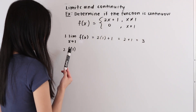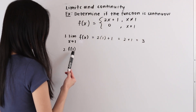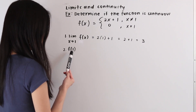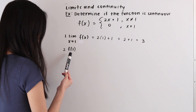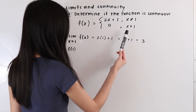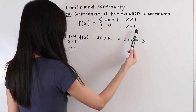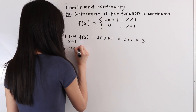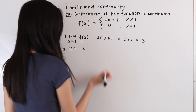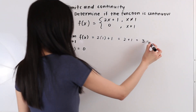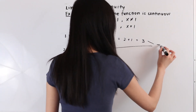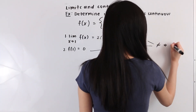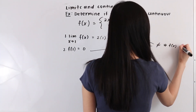As our next step, let's determine what f(1) is equal to — we want the y value corresponding to x equals one. Looking at our piecewise function, when x is equal to one, f(x) is equal to zero. So f(1) equals zero. From here, we can see that the limit (three) and f(1) (zero) are not equal to each other, and so f(x) is not continuous.